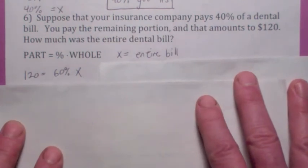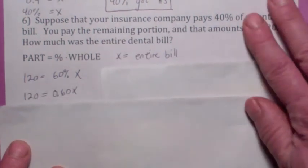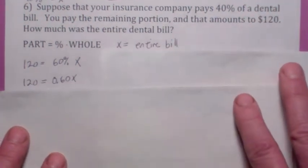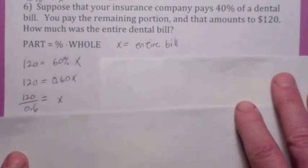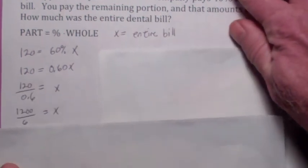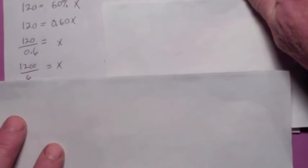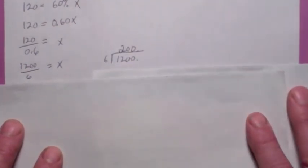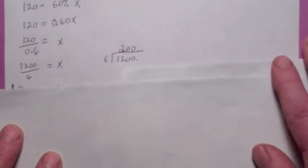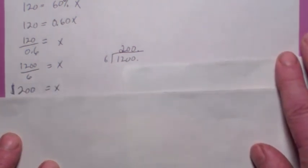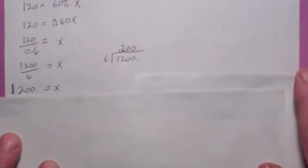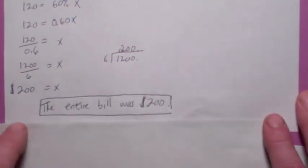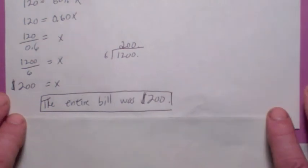Solving is not hard. We would change to a decimal. Then, let's say, divide both sides by 0.6. Move the decimal place over one place. If you wanted to, you could use long division. 6 goes into 1,200, 200 times. That equals $200. That answer makes sense. Doesn't it seem reasonable that the entire bill would be about $200? Don't forget to answer in words. Alrighty, we'll see you later. Bye-bye.